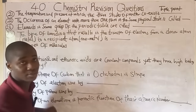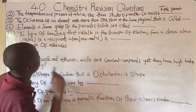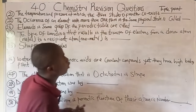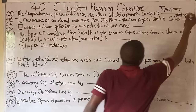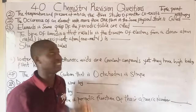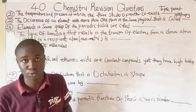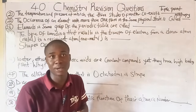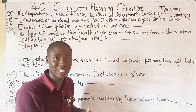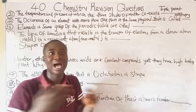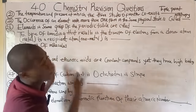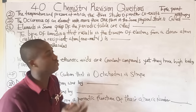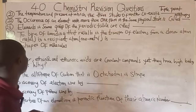Question twenty-two: the occurrence of an element with more than one form in the same physical state is called allotropy. Carbon exhibits various allotropic forms — crystalline forms include diamond and graphite, while amorphous forms include coal, charcoal, soot, and lamp black.